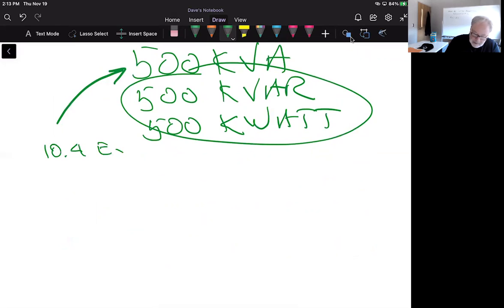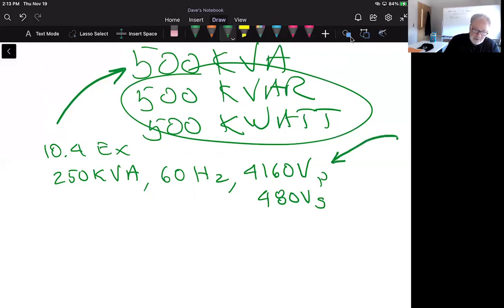So 10-4 example says that I have a nameplate of a distribution transformer and it is 250 kVA. It is 60 Hertz. And on the primary, it's rated at 4,160 volts and on the secondary 480 volts. So what that means, this is the acceptable voltage on the primary side. And then based on the turns ratio, we're going to output on the secondary side of very common voltage of 480 volts. He says, calculate the nominal and primary secondary currents. So that's pretty easy to do.